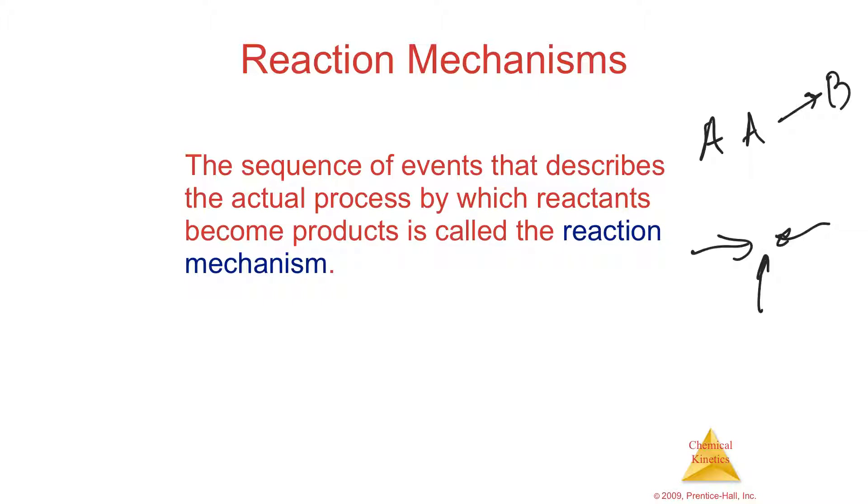You would try to do anything you could think of to not say we need three molecules slamming together. If you have single molecules reacting, those are called unimolecular, one molecule reacting to itself. Or if you have something like A plus B, that's called bimolecular. You have two molecules slamming together in order to make something.